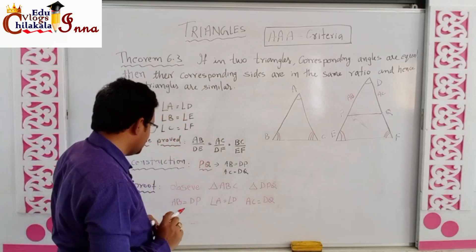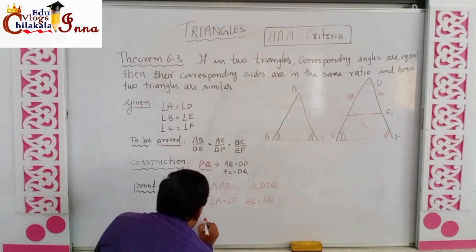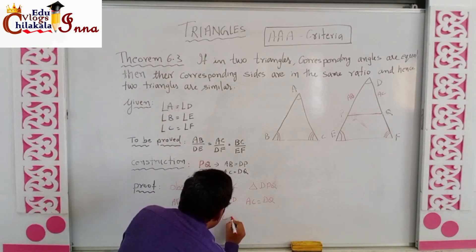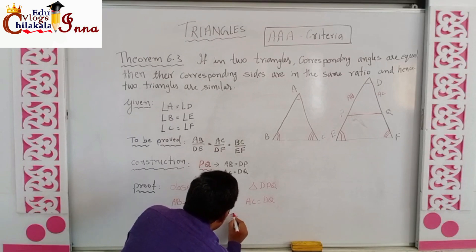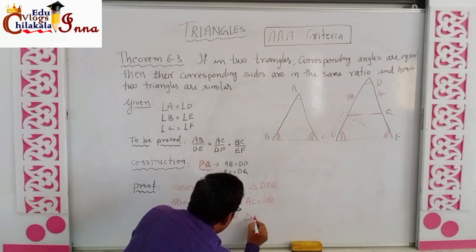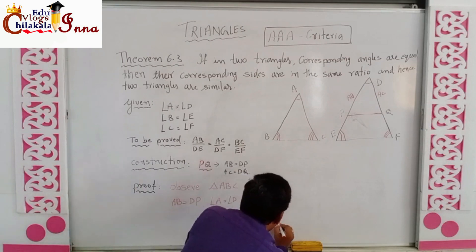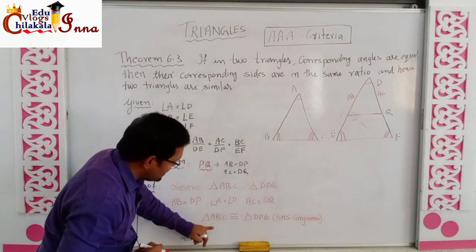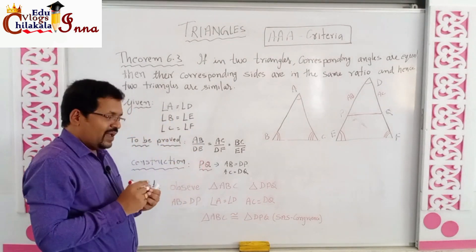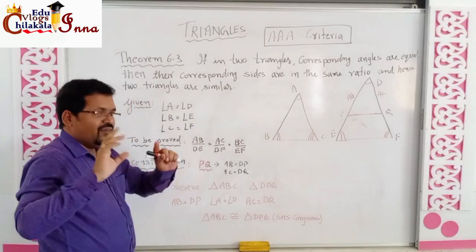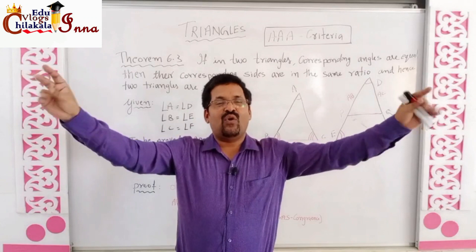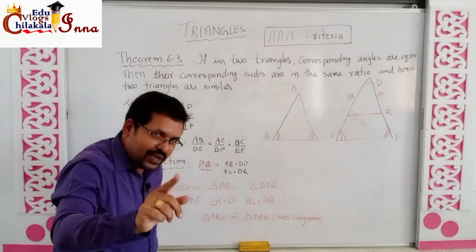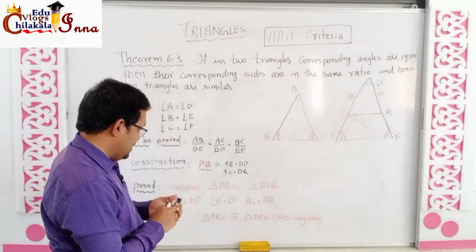By SAS congruence — which we studied in ninth class — triangle ABC is congruent to triangle DPQ, by SAS congruence. Whenever I say congruence, you should immediately remember CPCT — the corresponding parts of congruent triangles are equal.